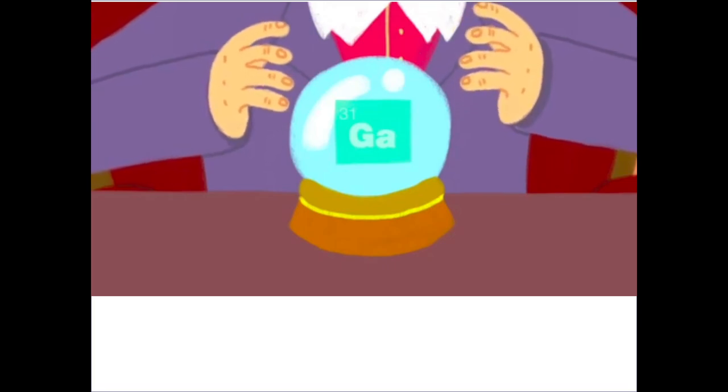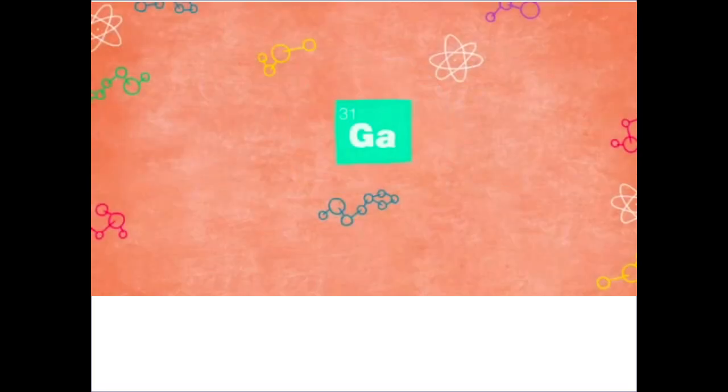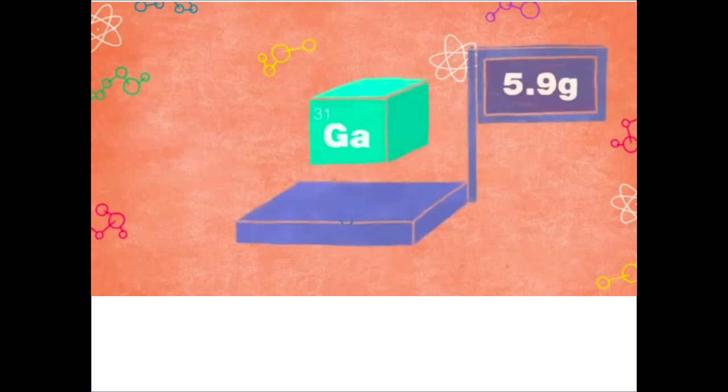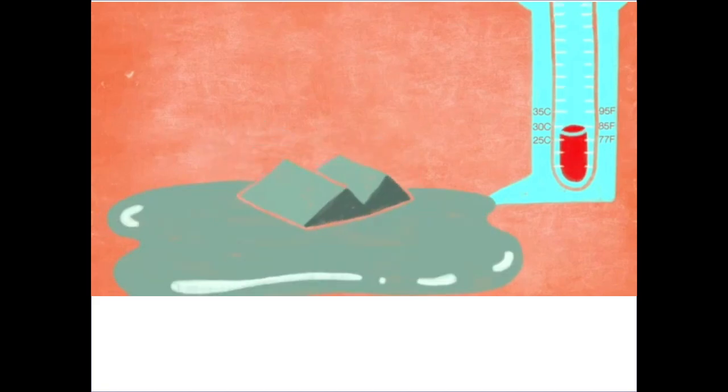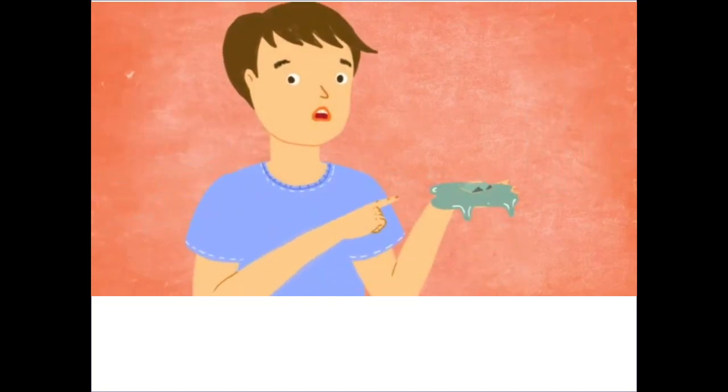So were Mendeleev's predictions right? Gallium's atomic weight is 69.72. A cubic centimeter of it weighs 5.9 grams. It's a solid metal at room temperature, but it melts at a paltry 30 degrees Celsius, 85 degrees Fahrenheit. It melts in your mouth and in your hand.